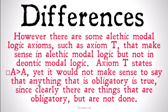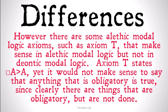However, there are some important differences. The alethic modal logic axioms do not always apply to deontic logic — specifically Axiom T. Axiom T states that anything that is necessary is the case, which makes sense since the actual world is a possible world and things that are necessary occur in all possible worlds. Yet it would not make sense to say that anything that is obligatory is true, since clearly there are things that are obligatory but not done. So Axiom T seems to make more sense in alethic modal logic than in deontic modal logic.